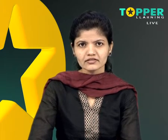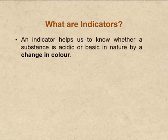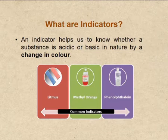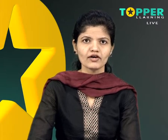How can one recognize whether any compound is acidic, basic, or neutral in nature — just by looking at it? No. Indicators help us know whether a compound is acidic or basic in nature by a change in color. Common indicators are litmus, methyl orange, and phenolphthalein. Let us see the effect of acids and bases on these indicators one by one.